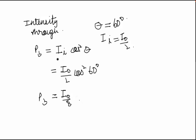So the intensity through P3 would become I0 by 8. Now this law that we have used here is also called Malus's law.